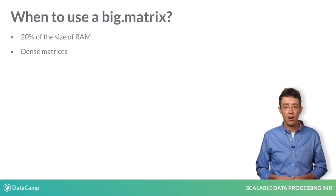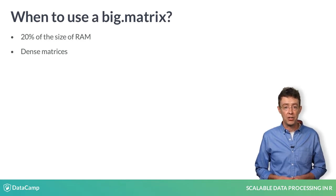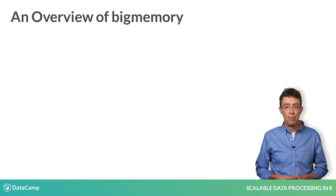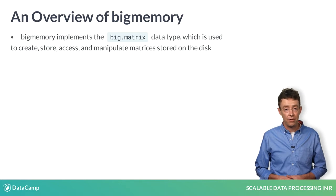For datasets that are at least 20% of the size of RAM and are also represented as dense matrices — matrices where most of the values are not zero — you should consider using a big matrix, which is implemented in the bigmemory package. By default, a big matrix keeps data on the disk and only moves it to RAM when it is needed. As a result, it won't bog down your machine when you run out of RAM.